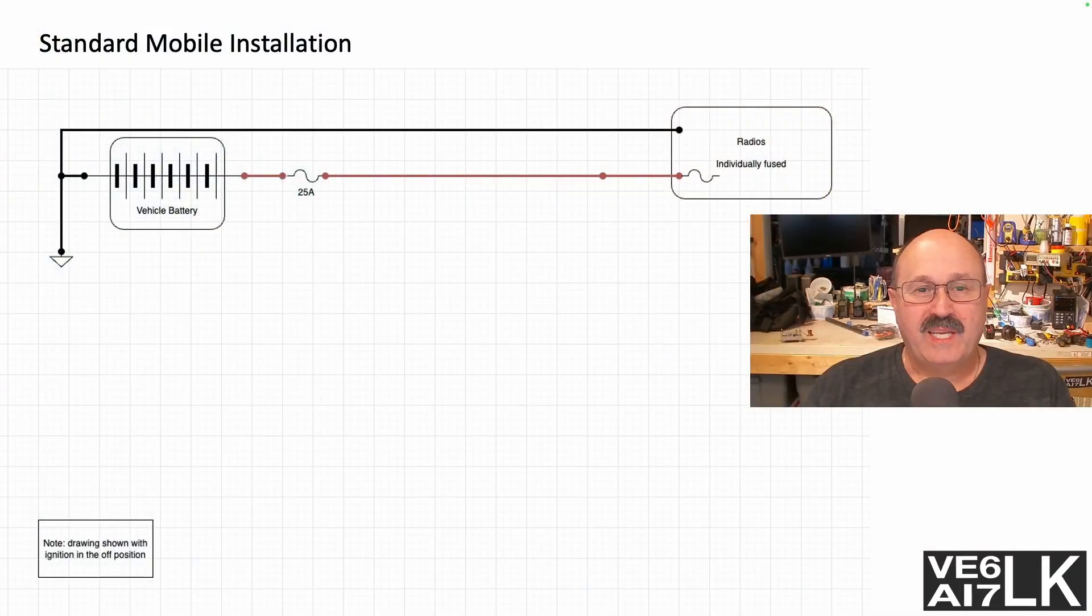All right, so let's get into it and let's start with the whiteboard. What you're looking at here is your typical mobile installation. You put a radio in, you put some fuses—one at each end, one at the battery and one at the radio—and you run the wire and put up your antennas and all the rest is good.